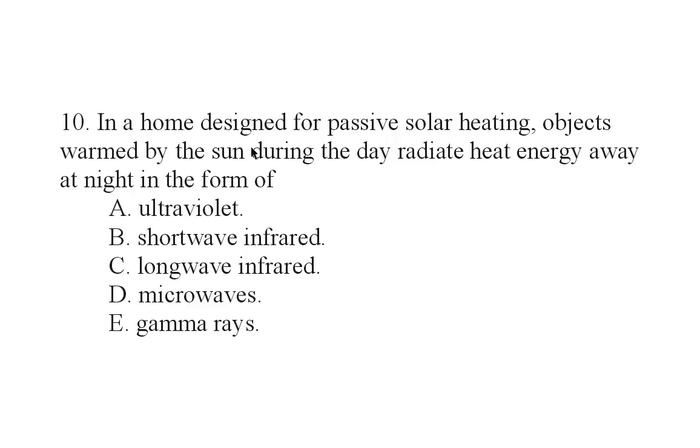In a home designed for passive solar heating, objects warmed by the sun during the day radiate heat energy away at night in the form of what? And we're given five choices: ultraviolet, shortwave infrared, longwave infrared, microwaves, or gamma rays.